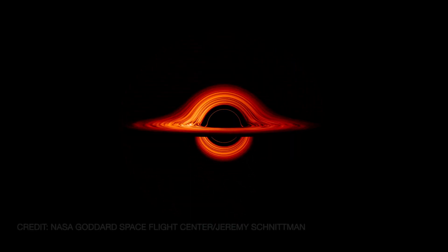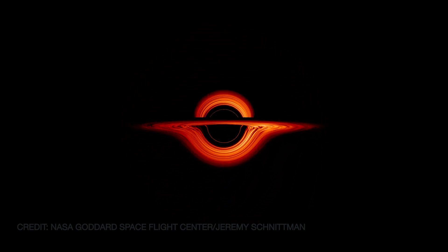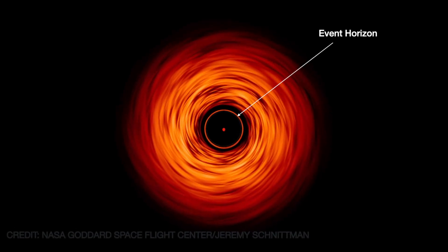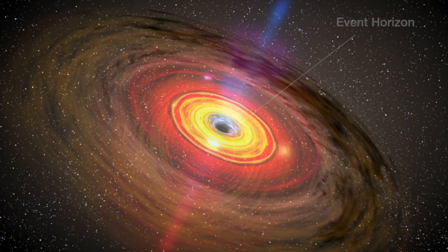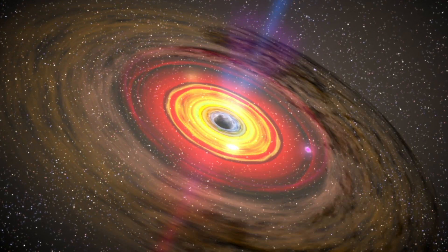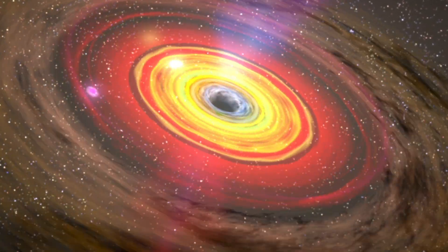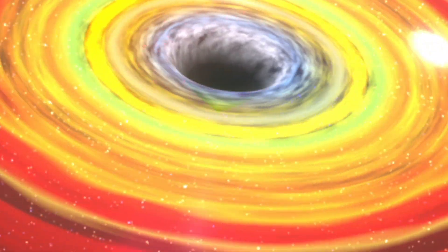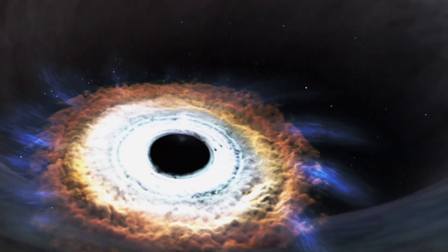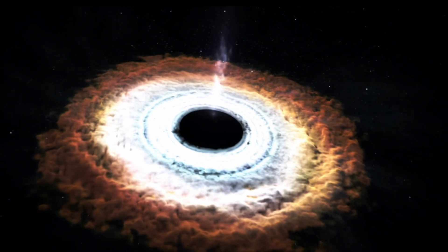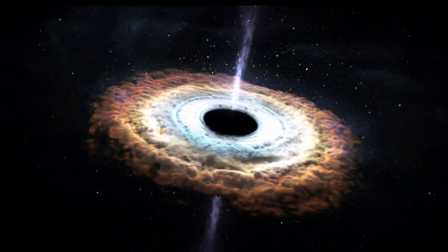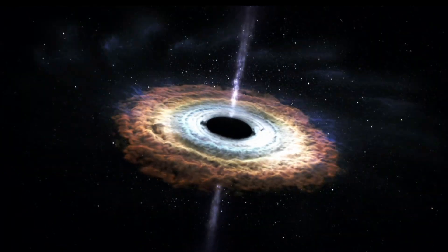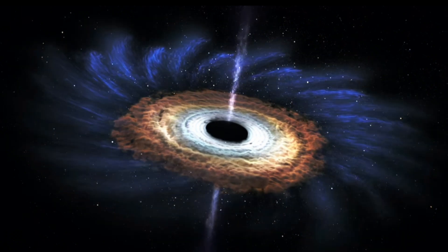However, this singularity remains hidden from us due to the defining characteristic of a black hole: the event horizon. This imaginary boundary surrounds the singularity and marks the point of no return for anything crossing it. Once inside the event horizon, the velocity required to escape back out would surpass the speed of light, rendering escape impossible and trapping anything within the black hole. The concept of the event horizon and the singularity align remarkably well with Mitchell's initial proposal about dark stars, underscoring the significant role his theory played in advancing our understanding of escape velocities from massive objects.